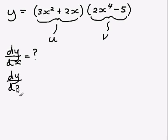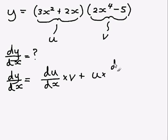So the product rule says that dy dx equals du dx times v plus u times dv dx. So we already know what v and what u are. What we've got to find out is what du dx is and what dv dx is.